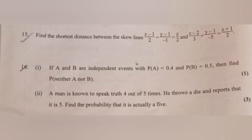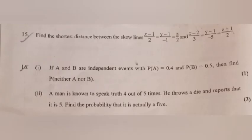Question 16.1: If A and B are independent events with P(A) = 0.4 and P(B) = 0.5, find P(neither A nor B). Answer: P(A′ ∩ B′) = 1 − P(A ∪ B) = 1 − 0.7 = 0.3.